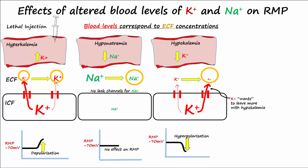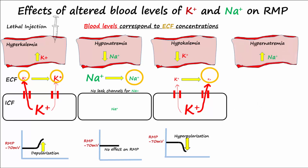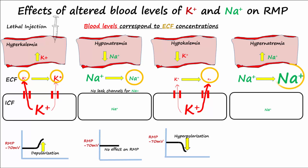Another scenario: what if sodium levels go up in the blood? This is called hypernatremia, and this would make sodium levels also go up in the ECF. How would sodium levels being higher than normal affect the RMP? Even though the gradient for sodium to go into the cell has increased, remember there are little or no leak channels for sodium, so sodium cannot enter the cell — so there would be no effect on RMP.